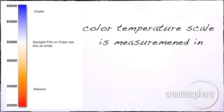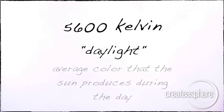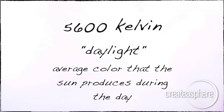The scale we use to measure color temperature is called degrees Kelvin. When that burning black-body light source heats up to 5,600 degrees, we call that daylight. And daylight is the average color that the sun produces during the day, and we mean average.